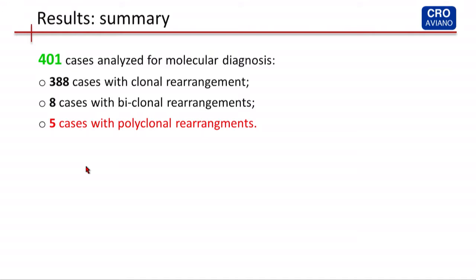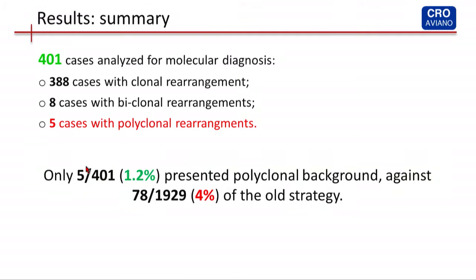To summarize our results: we found 388 cases with clonal rearrangement, eight cases with biclonal, and five cases that were polyclonal. This is very important, since we have only five negative cases. Remember that we analyzed only CLL cases at diagnosis, and since in my lab we have the possibility to perform both immunophenotypic and molecular analysis, I can confirm these cases are CLL with a clonal disease in immunophenotypic analysis. So we have only one percent of false negative cases against four percent with the old strategy — a very big improvement.